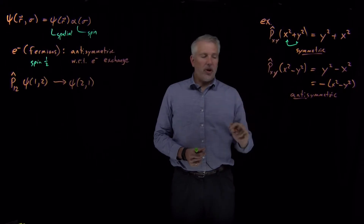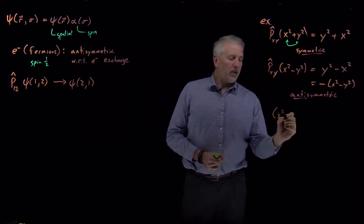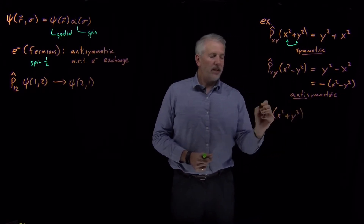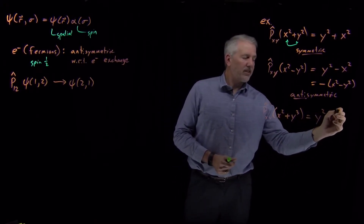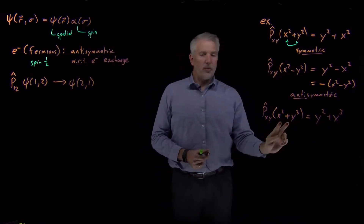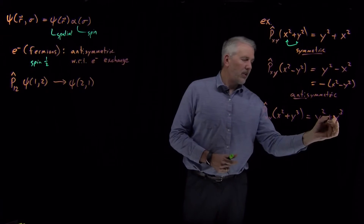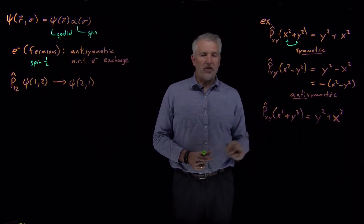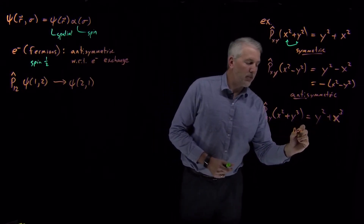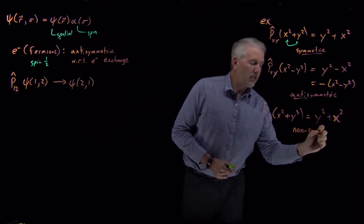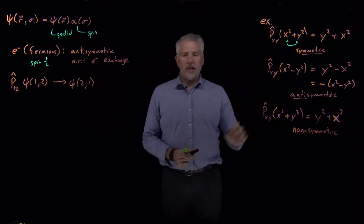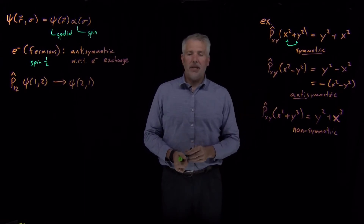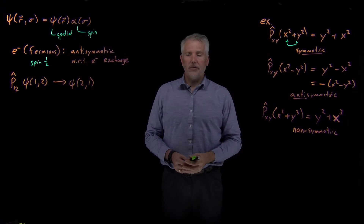Functions don't have to be either symmetric or antisymmetric. If I take the function x² + y³ and exchange x and y, I get y² + x³. This function has nothing to do with the original — it's not the same and it's not the opposite; it's a totally different function. I would say this function has no symmetry — it's non-symmetric with respect to exchange of the x and y variables.